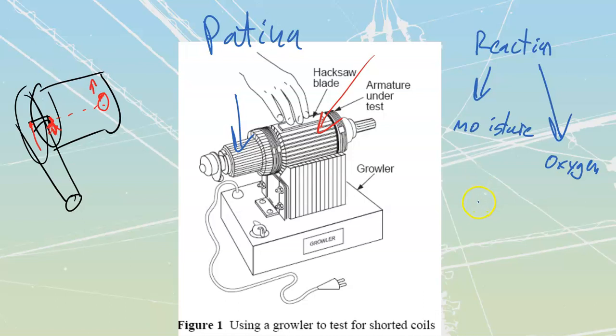We need oxygen to create this reaction. Between the arcing, the current traveling through there, the moisture, and oxygen, we get a covering on these that's going to be kind of a brownish reddish color. It should be glossy, meaning uniform. It should not be dull or matte because that means we're building up carbon.